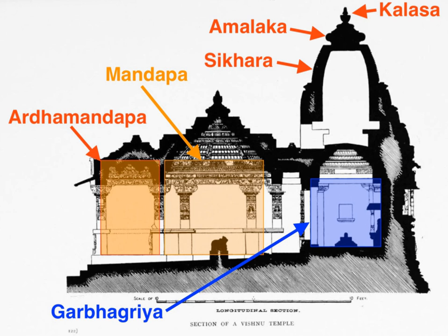A Hindu temple is meant to encourage reflection, facilitate purification of one's mind, and trigger the process of inner realization within the devotee. The specific process is left to the devotee's school of belief. The primary deity of different Hindu temples varies to reflect this spiritual spectrum.